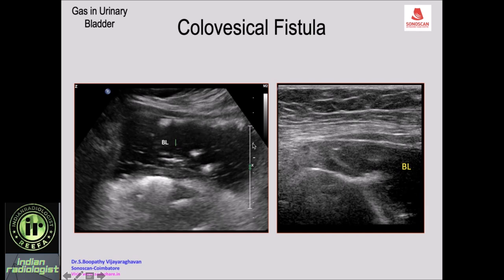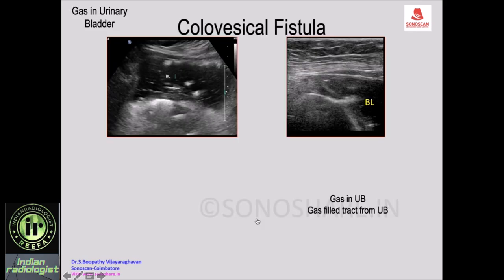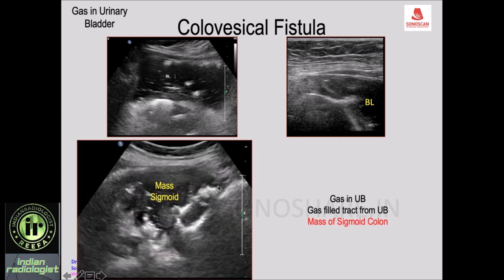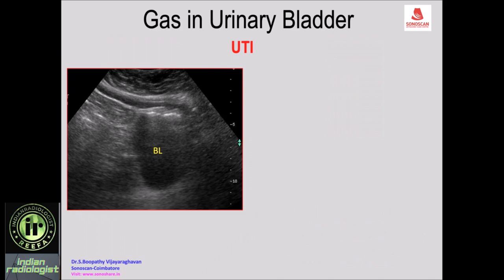In another case of gas in the urinary bladder, you see gas bubbles and fecal masses in the urinary bladder with a tract extending from the urinary bladder posteriorly — the cycle tube sign indicating a fistula. When you explore this area you see an irregular mass of sigmoid colon: this is carcinoma of the sigmoid which has eroded into the bladder producing a colovesical fistula, diagnosed by ultrasound.